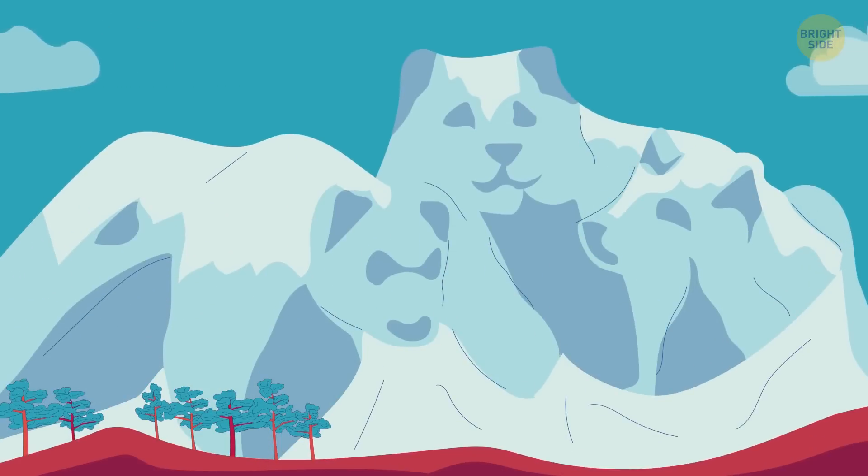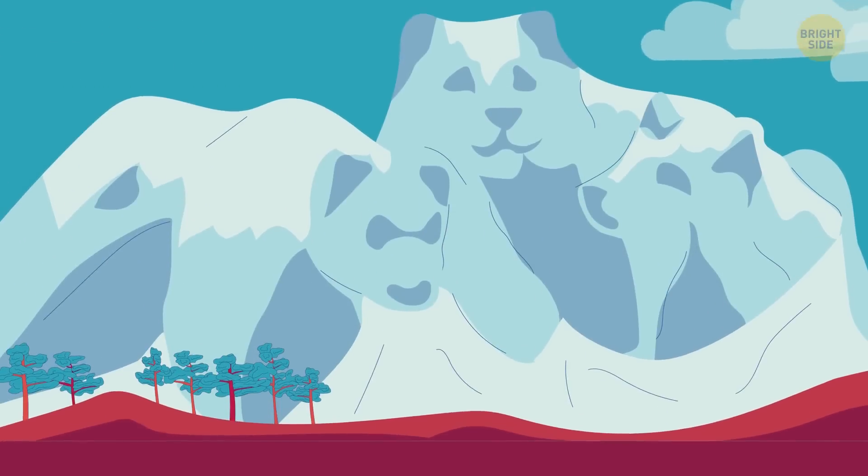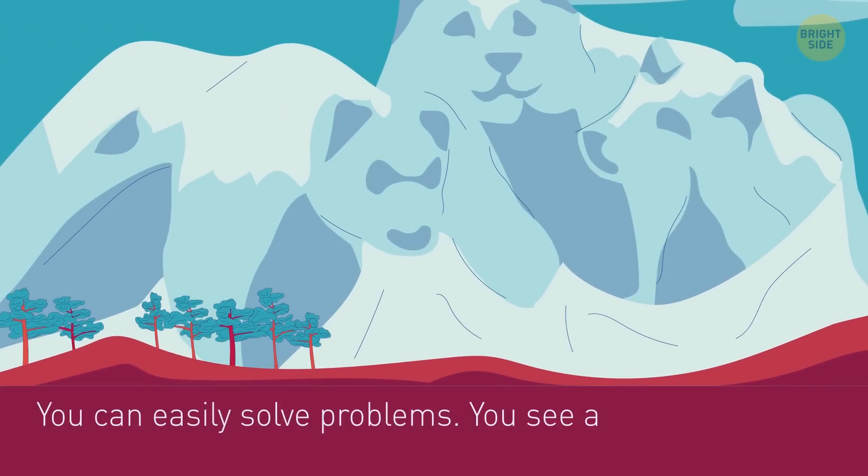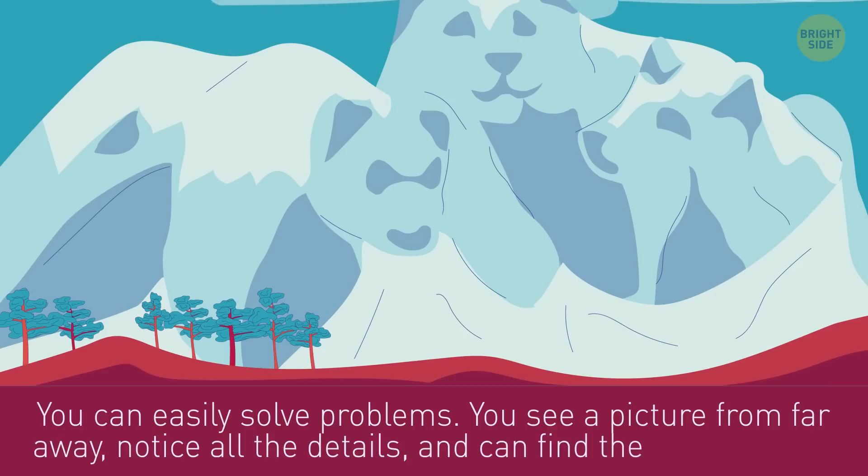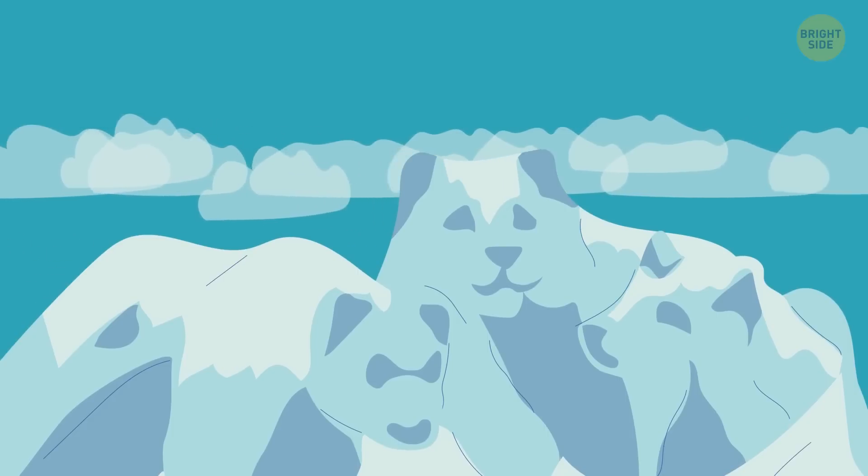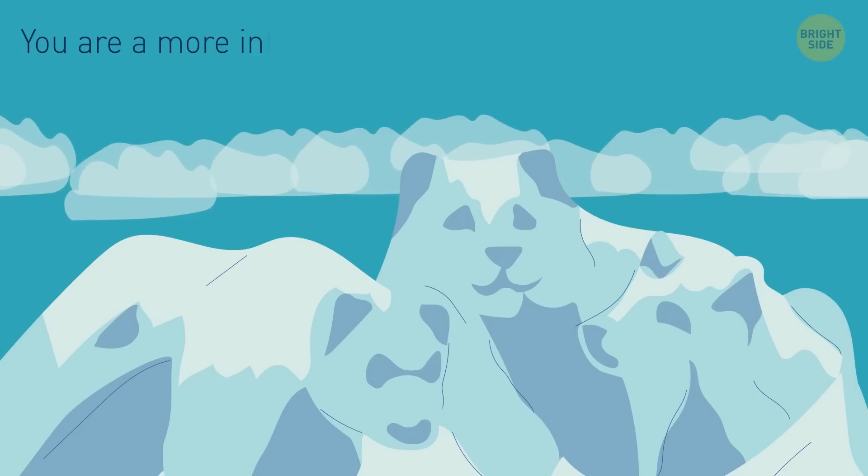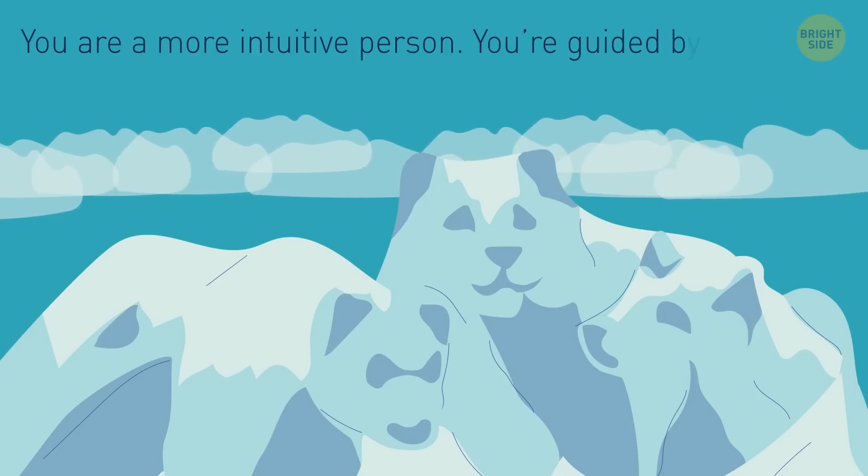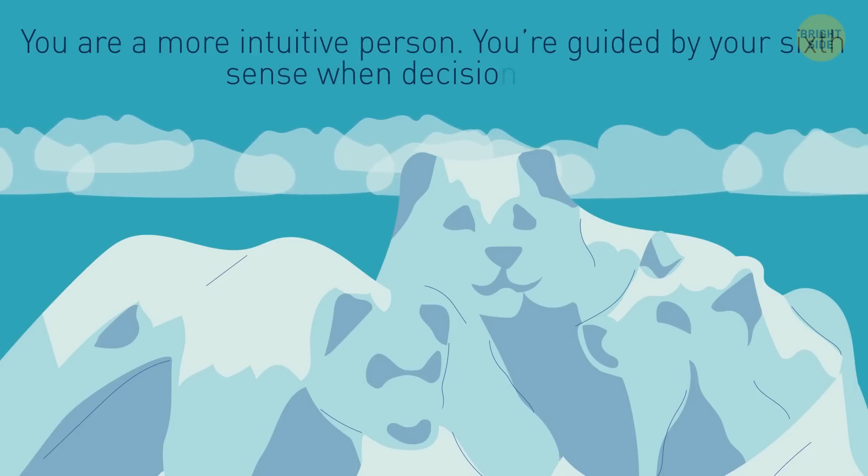Ooh, cute bears. If you saw them first, then you can easily solve problems. You see a picture from far away, notice all the details, and can find the best solution. But if for you, this picture is a mountain landscape, then you are a more intuitive person. You're guided by your sixth sense when decision-making.